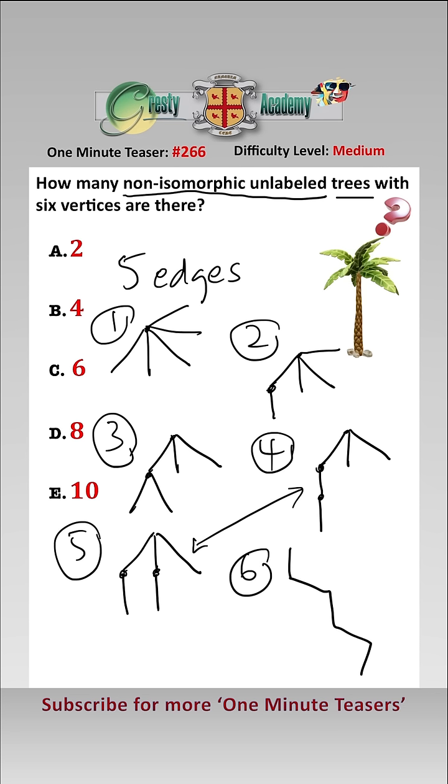So the total number of different non-isomorphic unlabeled trees with six vertices is answer C, six. Incidentally, the answer for five vertices is three and the answer for seven vertices is eleven. Maybe we're just remembering those in case they come up in an exam.